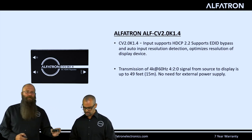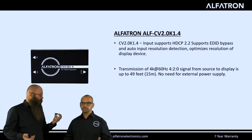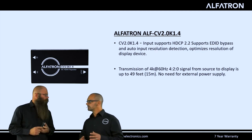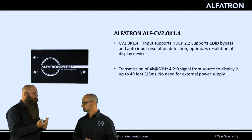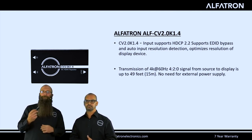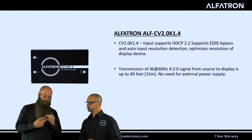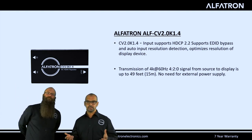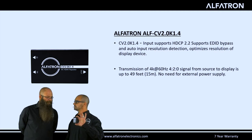The CV 2.0 K 1.4 is designed to enhance compatibility between HDMI sources and displays. It helps with legacy devices where there's a resolution or refresh rate mismatch — for example, when a source pushes 60Hz but the display wants 50Hz. The EDID bypass function ensures the best resolution for the display. Like the B20K, it requires no external power supply, drawing power from HDMI. The unit auto-detects the best resolution between the two devices and outputs accordingly.